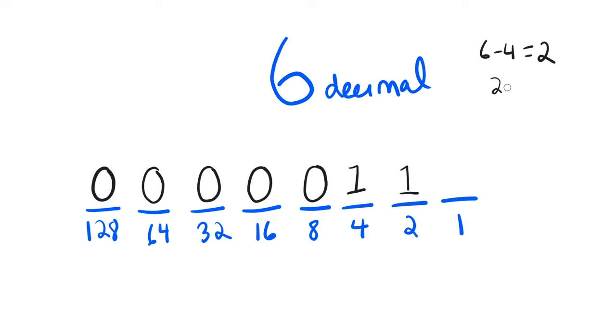And now, subtract again, 2 minus 2 equals 0, there's nothing left to represent. We have entirely represented the value 6 already. So that means we can put a 0 in this remaining place.